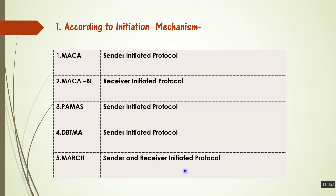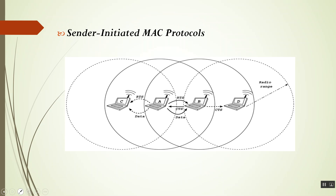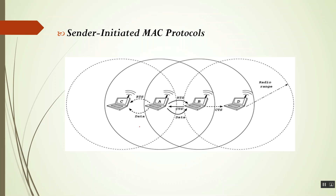A sender-initiated protocol requires the sender to initiate communication by informing the receiver that it has data to send. Node A sends an explicit RTS (Ready to Send) message to Node B. Node B can then reply if it is willing to receive data from A. If positive, it returns a CTS (Clear to Send) message to Node A, and Node A subsequently proceeds to send data.